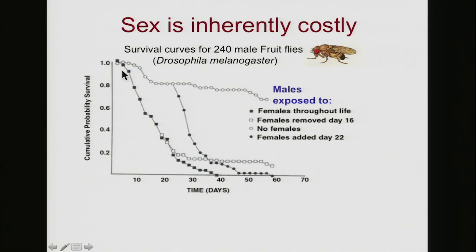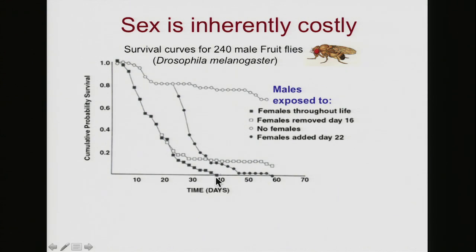But if we allow them to mate — males in with females — there are fewer and fewer still alive and they're dying off like flies, so that nobody who's been allowed to mate with females lives longer than 40 days.